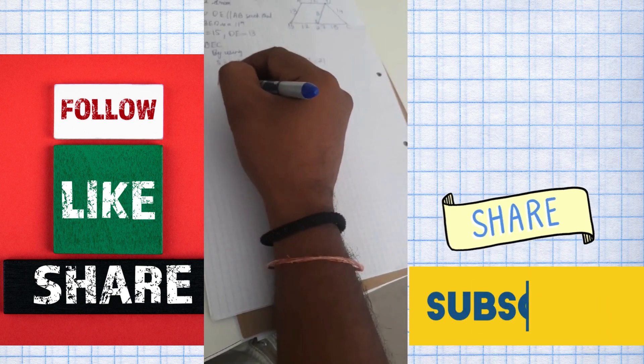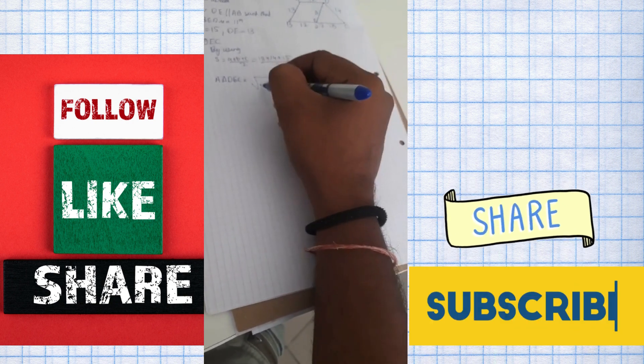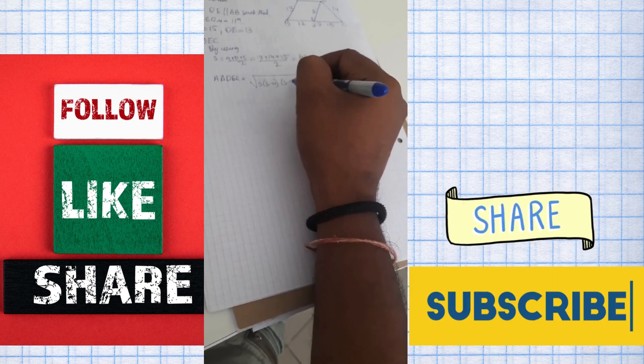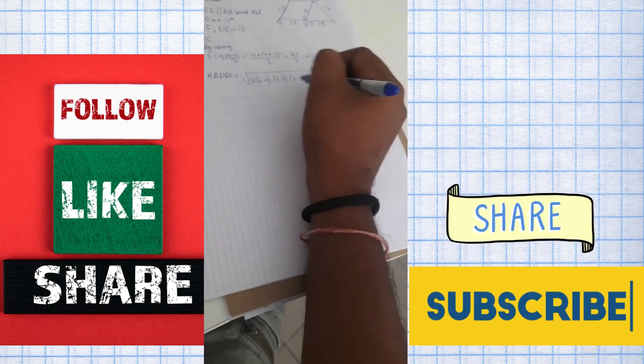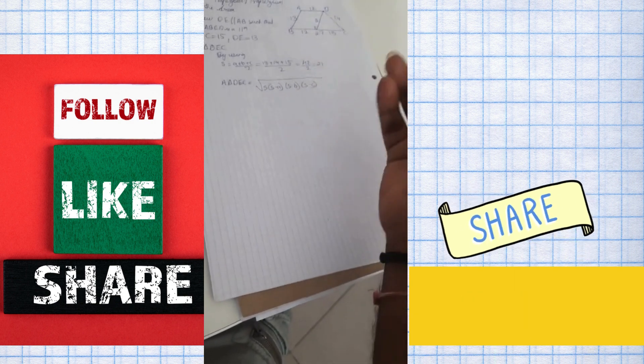Now we use the formula: area of triangle D, E, C is equal to square root of S, S minus A, S minus B, S minus C, where A, B, C are the sides of the triangle D, E, C. You can take anything as A, B and C respectively.